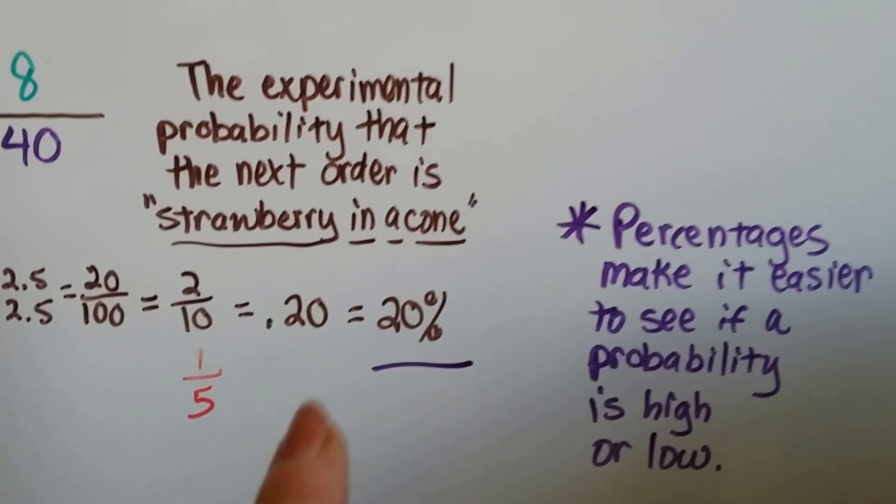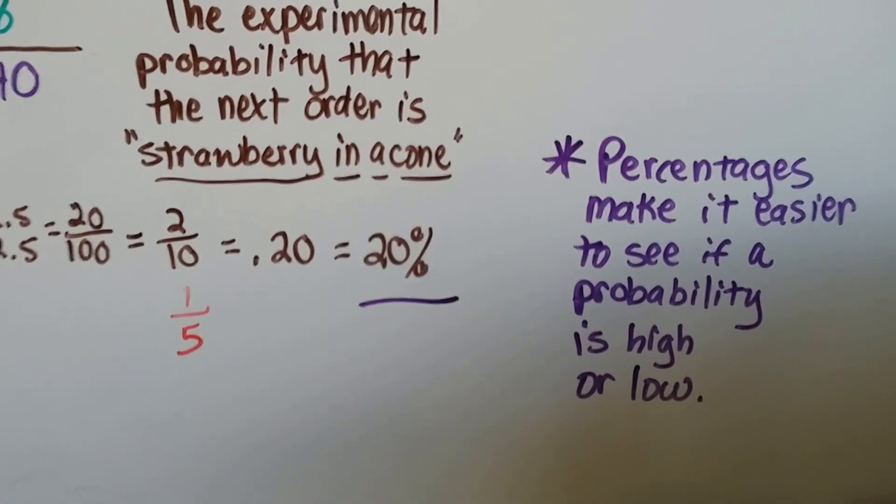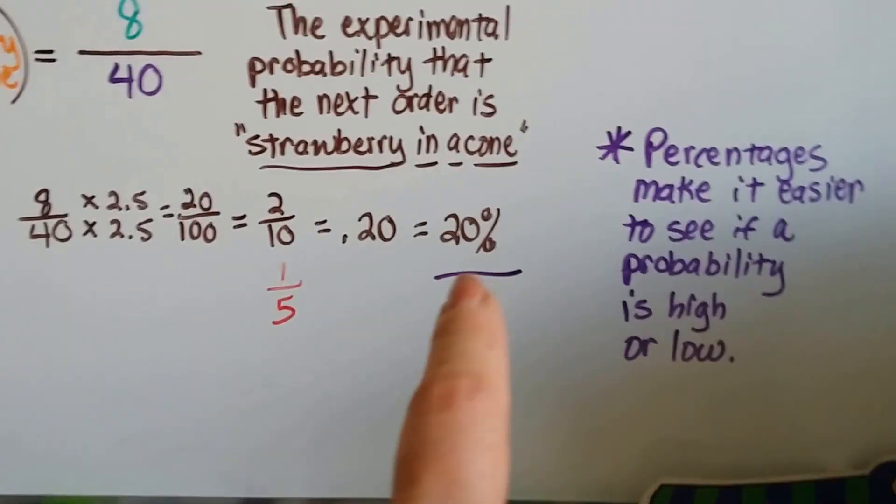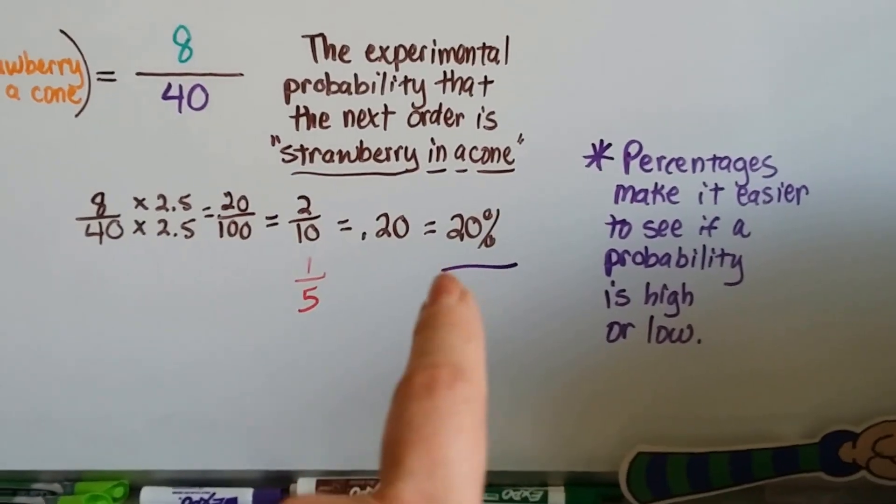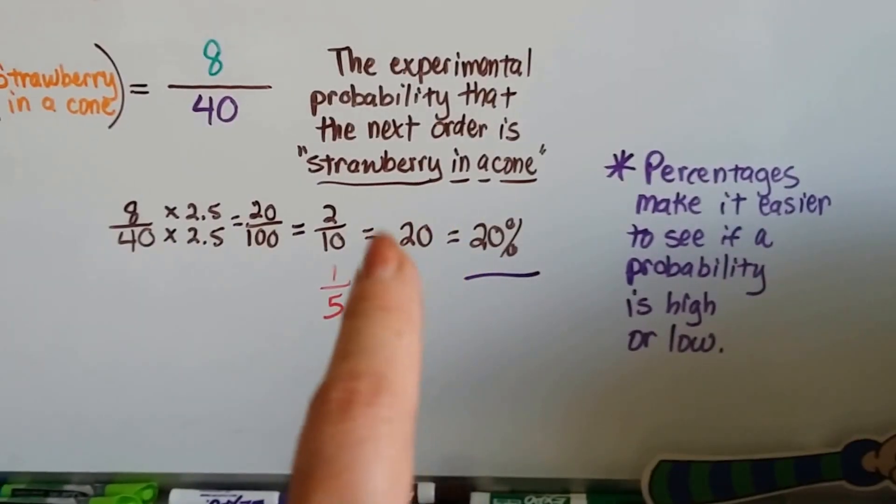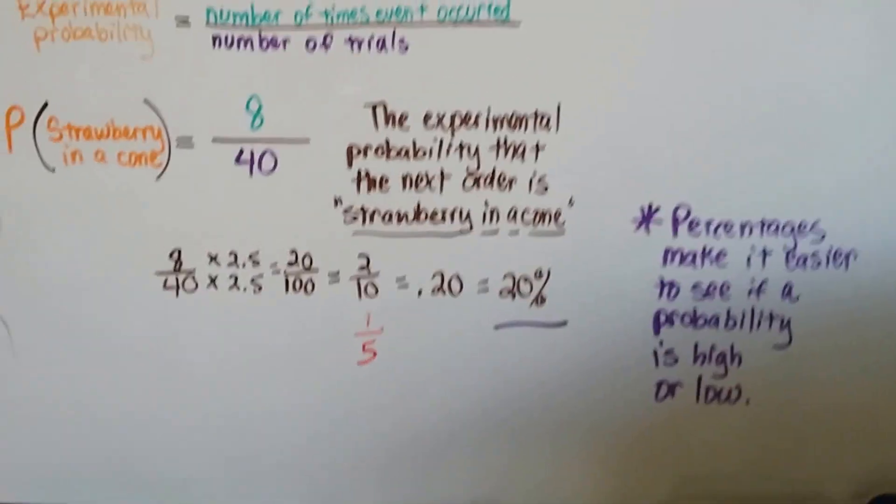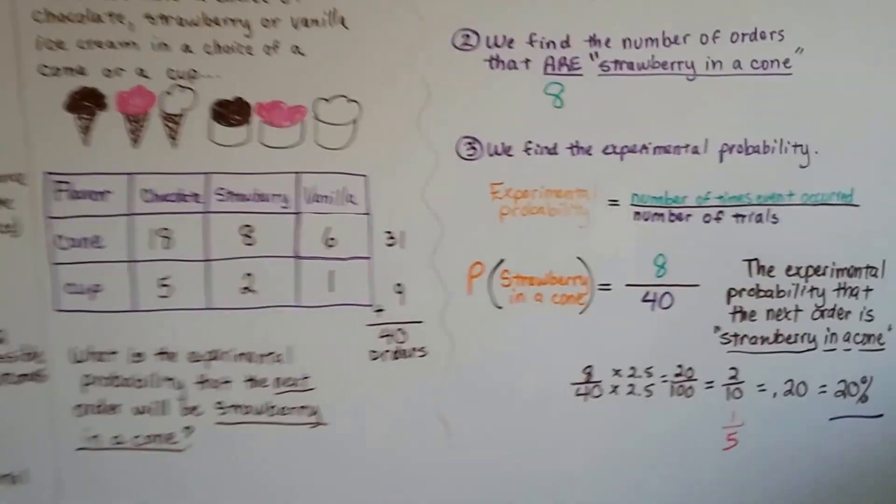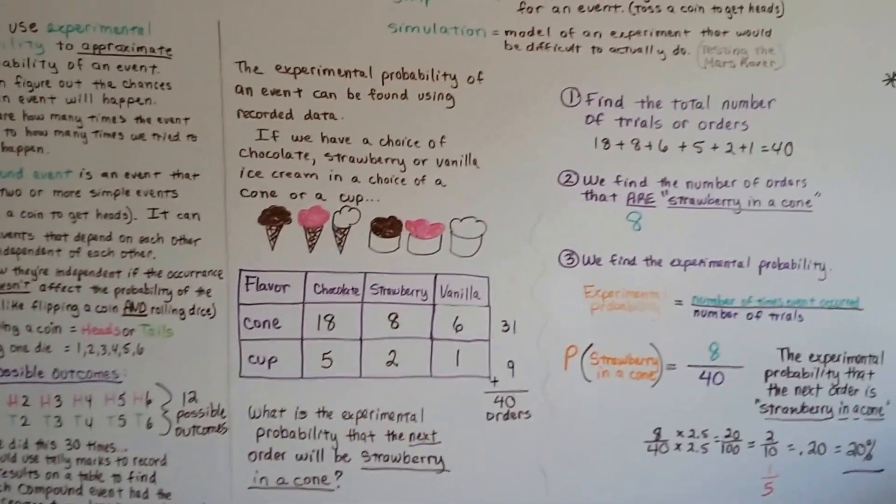All right, so, the percentages make it easier to see if the probability is high or low. Are the chances extremely high that it's going to be strawberry in a cone? No, but it's a 1 out of 5 chance. It's enough of a chance that he better have strawberry and he better have cones. That is how you calculate experimental probability of compound events, and that's what compound events are.